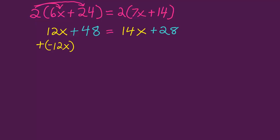I decide to move the 12x over with the 14x. To do that, I have to add the opposite of 12x to both sides, which is negative 12x. So on the left, I'll get 0 plus 48. On the right, I'll get 14x plus negative 12x, which is 2x plus 28.